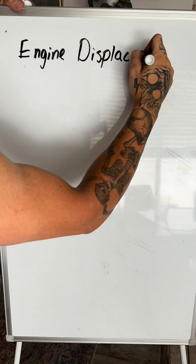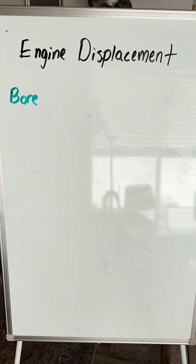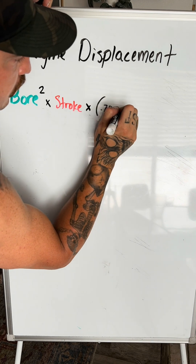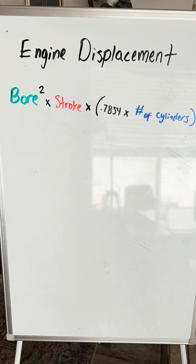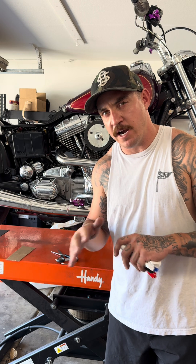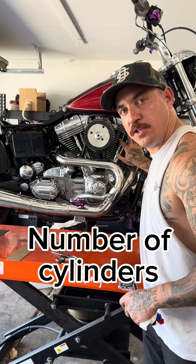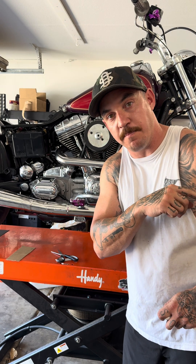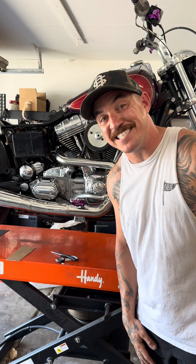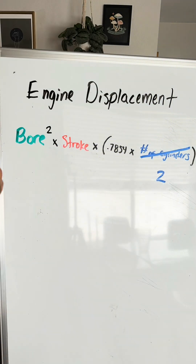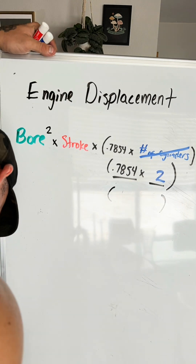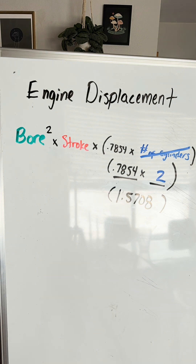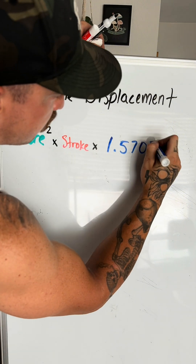Here's the calculation for engine displacement: it's going to be bore squared, multiplied by the stroke, then the number of cylinders multiplied by this constant. We're going to break this equation up into three parts. Every single Harley Davidson big twin, including Sportsters, is going to have two cylinders. So let's go back to the whiteboard and plug in two cylinders to make this problem even simpler. We know every single Harley Davidson has two cylinders, so we multiply the constant by two, which gives us 1.5708. We're only going to use this number from now on: 1.5708.